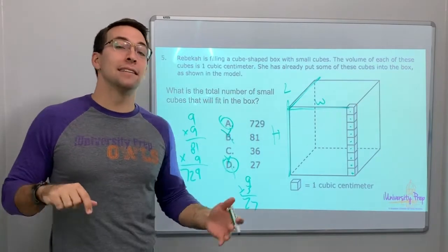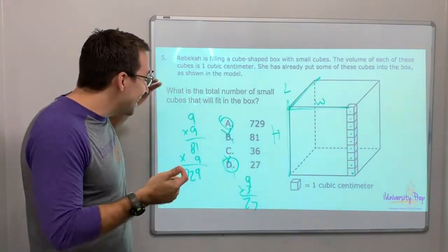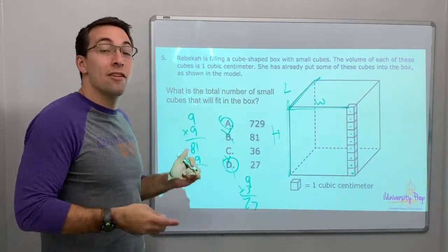Length times width times height. With a cube, side times side times side, it's... Length times width times height. Seven hundred twenty-nine.